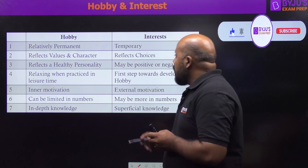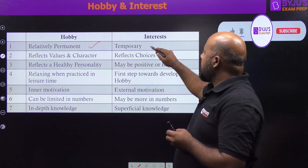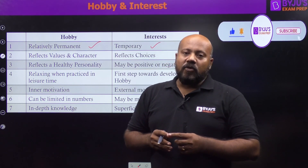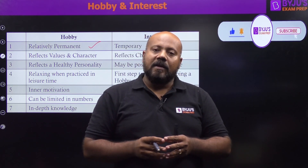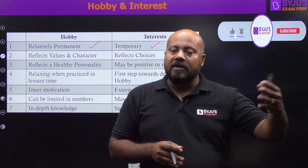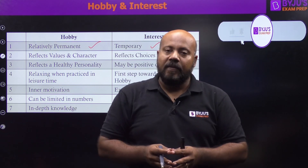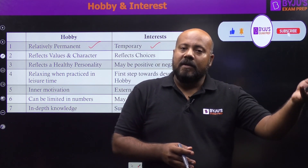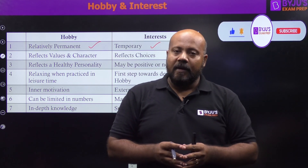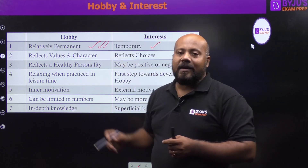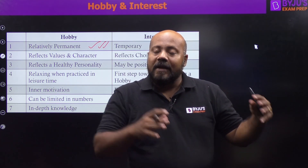The first point is: hobby is relatively permanent whereas interest is temporary. You may have interest in watching cricket or playing cricket, but the next month, three months, six months, or one year later you may develop interest in singing, and next time you may be interested in something else. But when you say something is your hobby, it is comparatively permanent — hobby is not going to be changing very frequently.